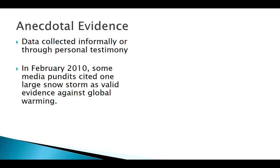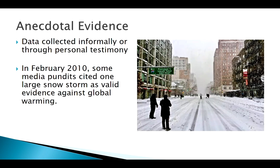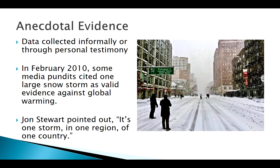This was around when all the global warming talk was really heating up, so people said there's this really big snowstorm, it can't be happening. I saw this on the Daily Show — Jon Stewart must be a student of data collection — he says it's one storm in one place. Single instances, while interesting, just aren't always that useful for getting the big picture.